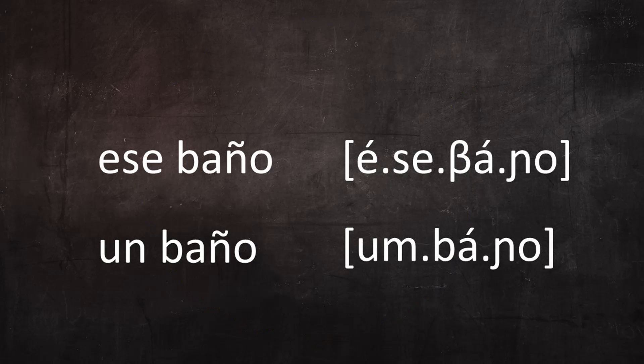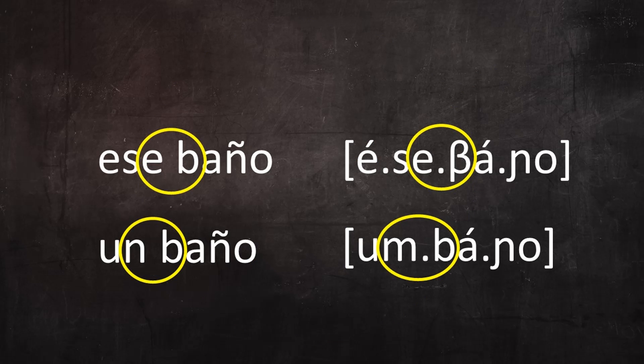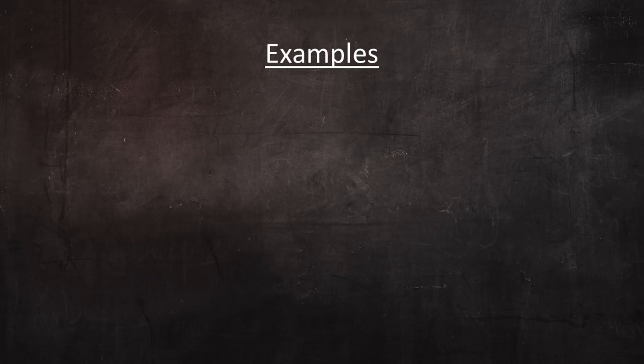One very important concept that must be kept in mind is that all rules of Spanish phonology apply across word boundaries. So when a word starts with one of these sounds, whether it's pronounced as an approximant or fricative, or as a stop, depends on the sound that the preceding word ends with. Let's look at some example words and phrases.